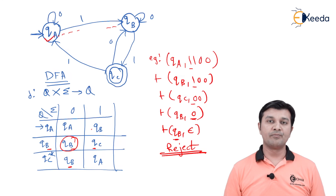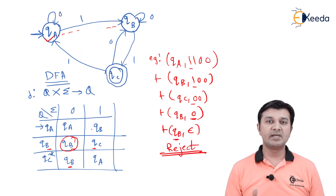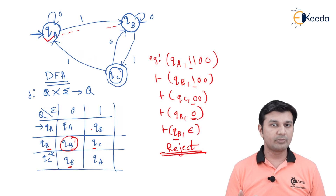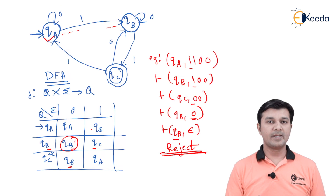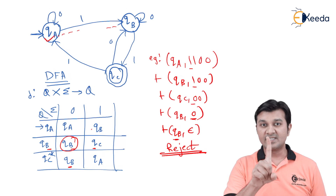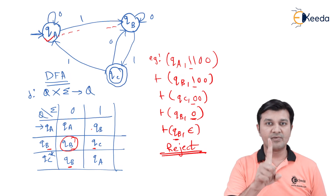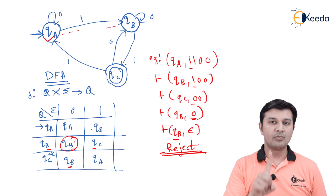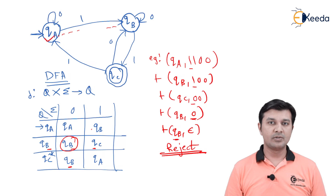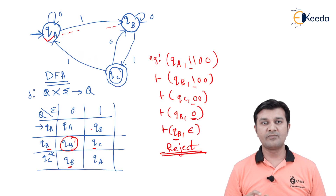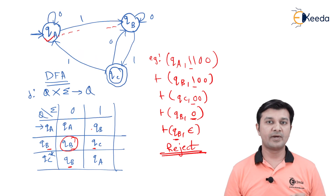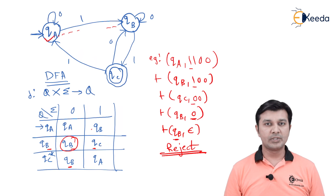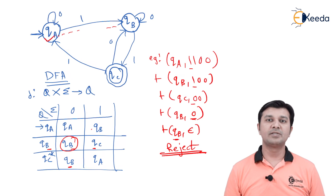That's how my Deterministic Finite Automata behaves. The main thing to remember is: in DFA, from each state on each input symbol, there is exactly one transition. With this, we end the session for Deterministic Finite Automata. See you in the next session, thank you.